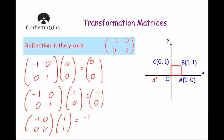And then the second row by the column: 0 times 1 is 0, 1 times 1 is 1, adding them together is 1. So it will be reflected to the point minus 1, 1, which will be there — that's where the point B dash will go.